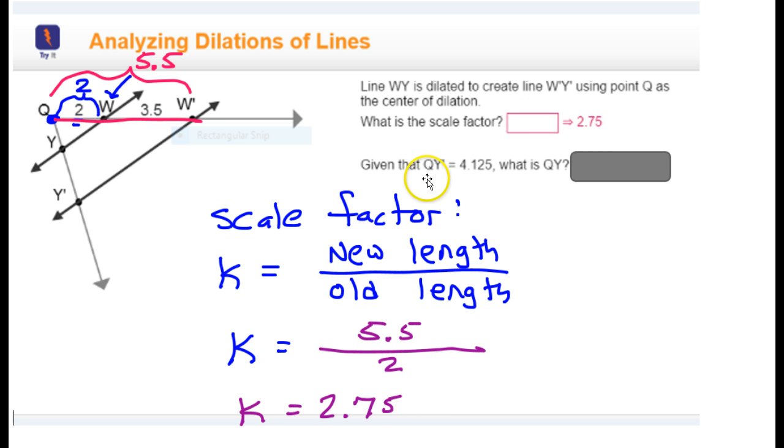Now, given that segment QY prime is 4.125, and here is distance QY prime over here. And we're told this is 4.125. Notice this is a new distance, which would be here in the numerator.